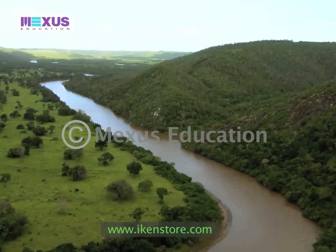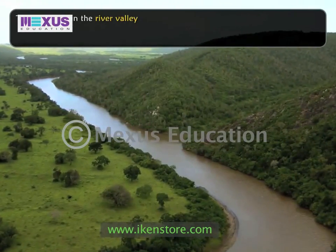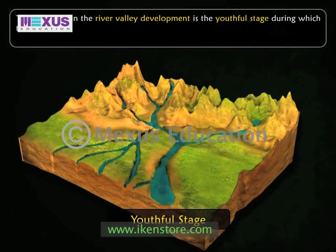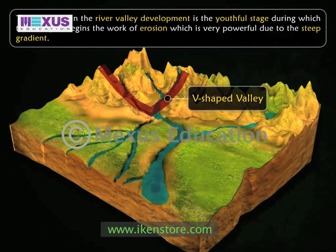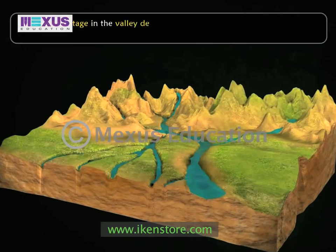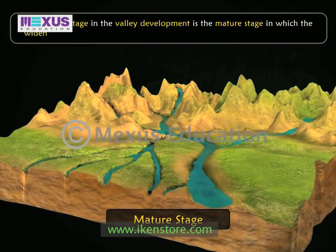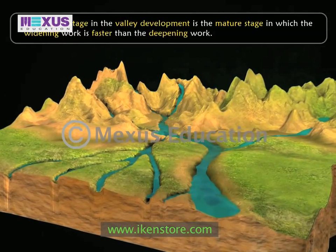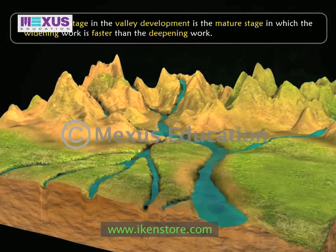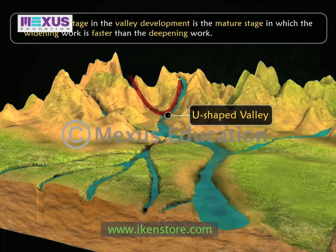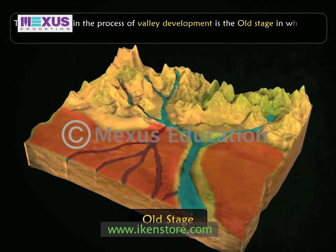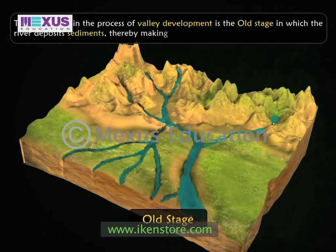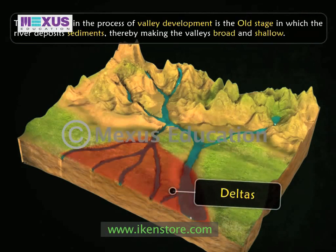The first stage in river valley development is the youthful stage, during which the river begins the work of erosion, which is very powerful due to the steep gradient. V-shaped valleys are formed during the youthful stage. The second stage is the mature stage, in which widening work is faster than deepening work, hence the valleys formed are wider — an example being a U-shaped valley. The third stage is the old stage, in which the river deposits sediments, making the valleys broad and shallow. Deltas are formed during this stage.